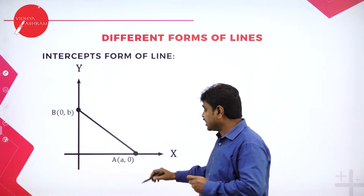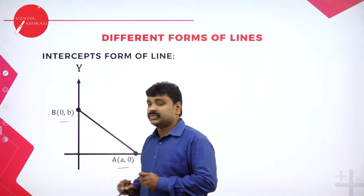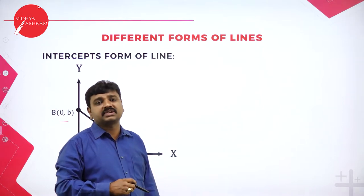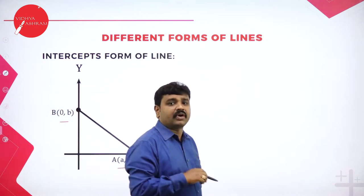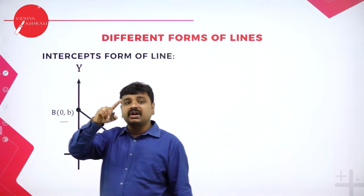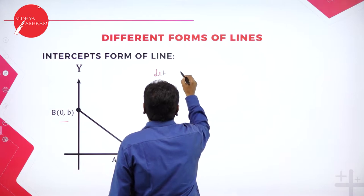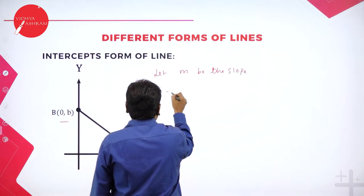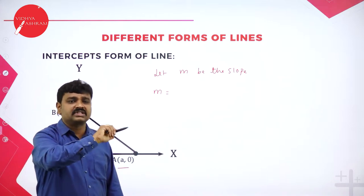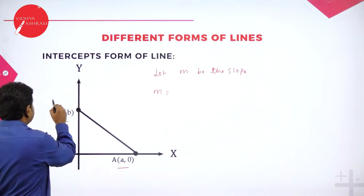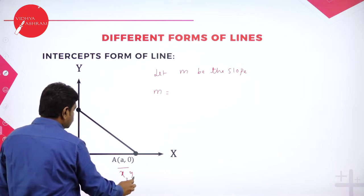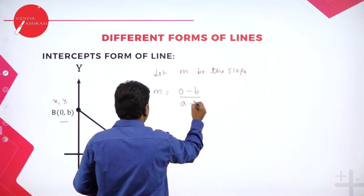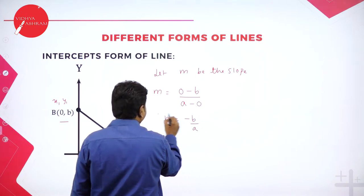Consider a line which cuts the x-axis at a comma 0 and cuts the y-axis at 0 comma b. From the diagram you can use two-point form or point slope form. Let m be the slope of the line. To find slope of the line joining these two points, use difference of y-coordinates by difference of x-coordinates. So y2 minus y1 by x2 minus x1 gives 0 minus b divided by a minus 0, so slope m equals minus b by a.